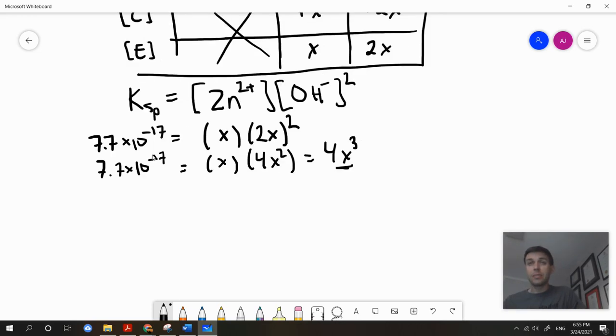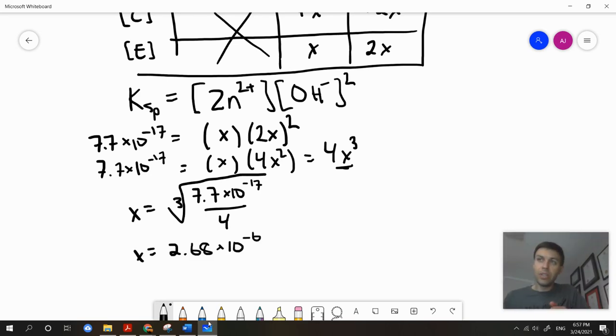Now, I'm going to solve for x. When we solve that, we get an x value of 2.68 times 10 to the negative 6.